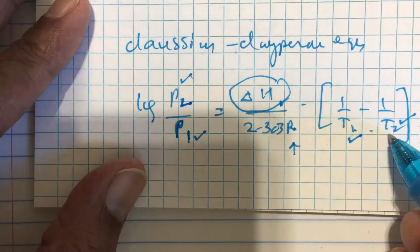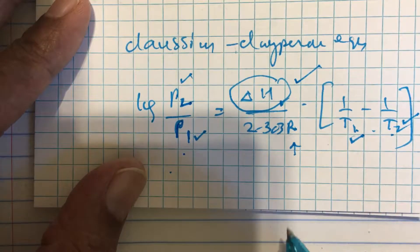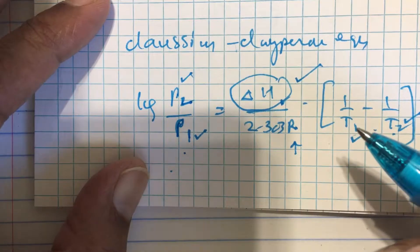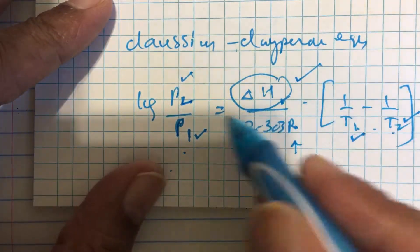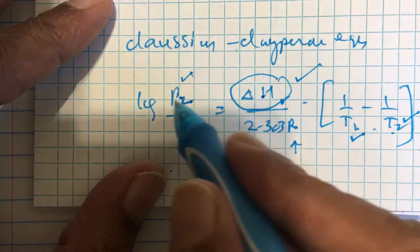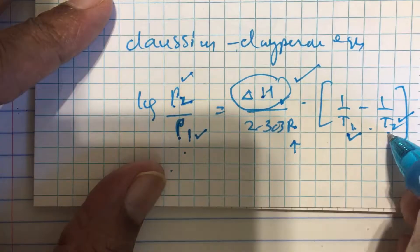the knowledge of T1, T2, p1, p2 will help you to find the heat of vaporization or enthalpy of vaporization. Or else if you know the enthalpy of vaporization and the p1 at a particular temperature, you can find the p2 at a different temperature.